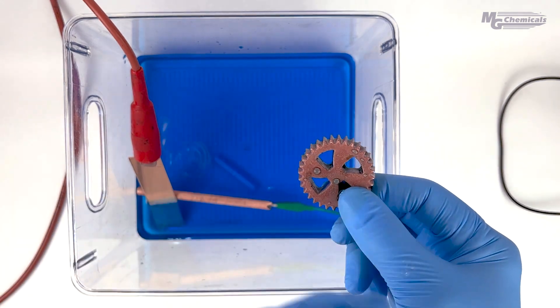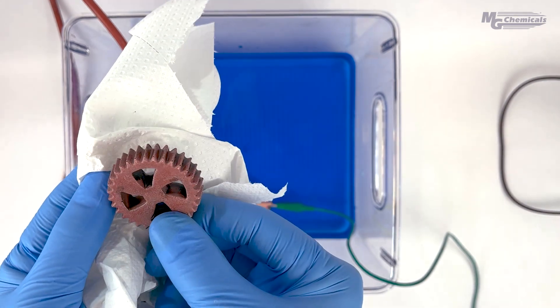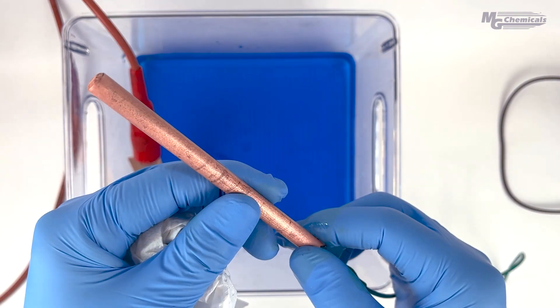Here we use 20 volts and 1.5 amps to plate the parts, but you may require more or less current, depending on the combination of anode and cathode.